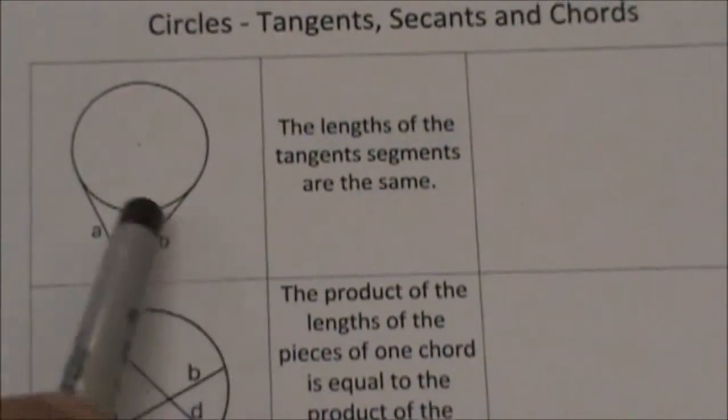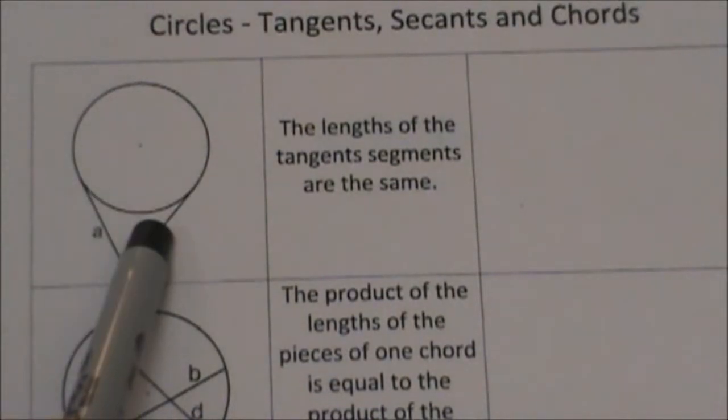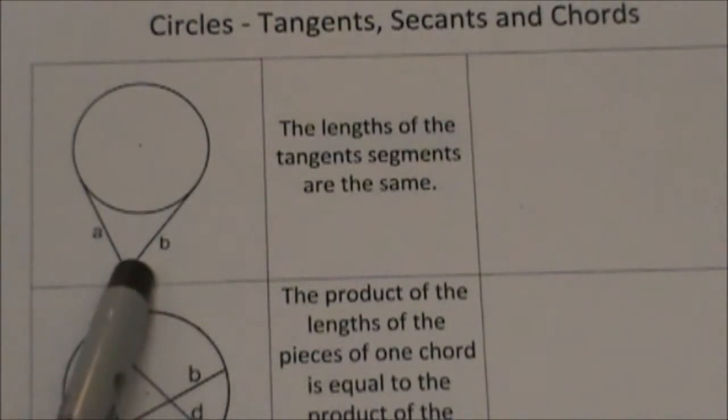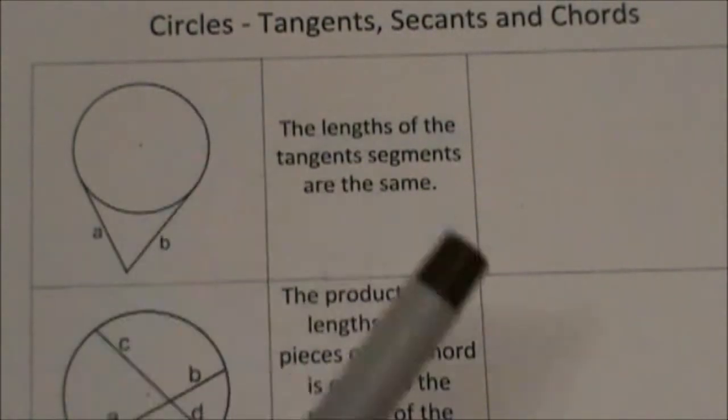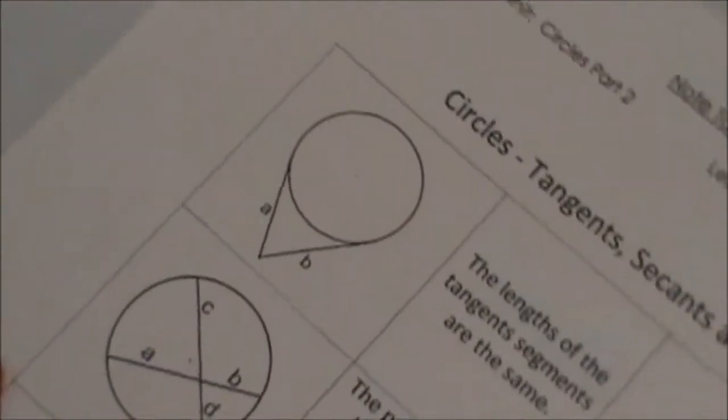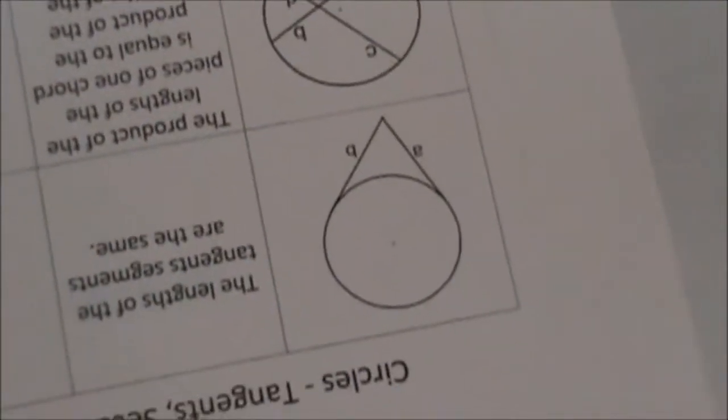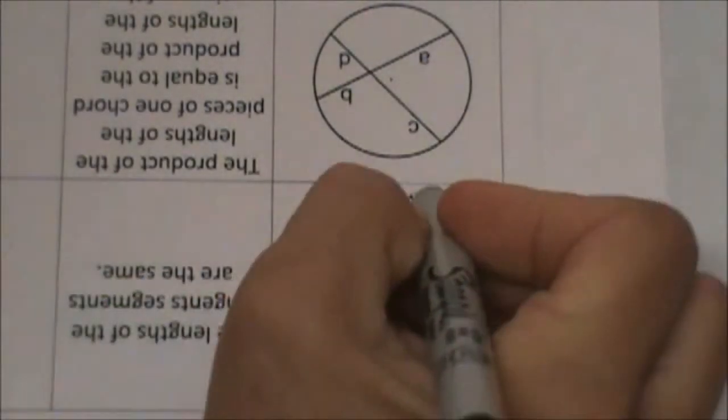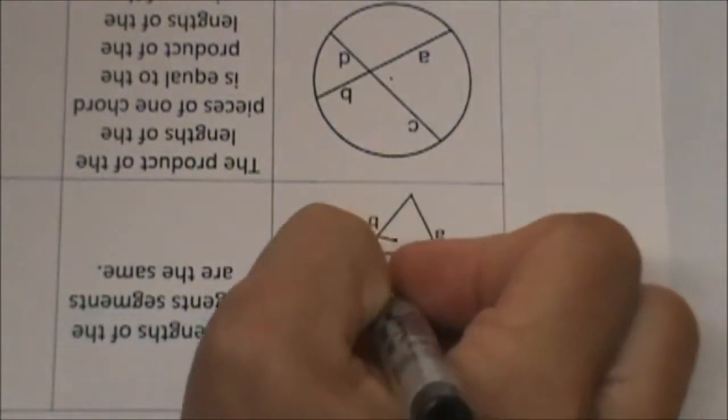We're going to start with just two tangents. We have a circle and then an exterior point and we have two tangents that are drawn to the circle. As we learned, if you remember this and I'm going to flip this upside down so you can see it. What rule does this follow? This follows the party hat rule.